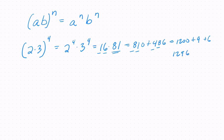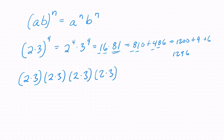And that is essentially what the law is telling us. We can apply it this way. But also, it's intuitive because if you have 2 times 3 to the 4th, that represents this: 2 times 3 multiplied out 4 times.